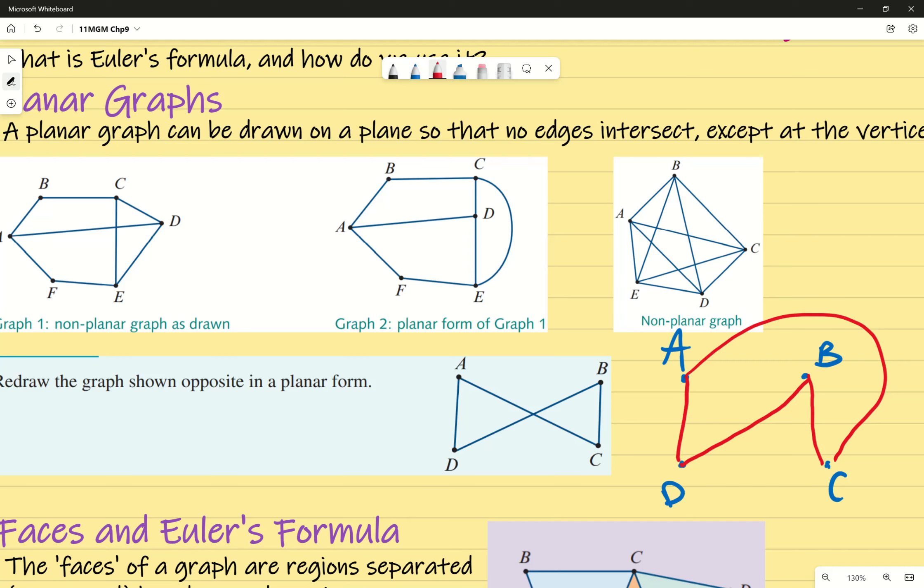You can just move edges around but it means the same thing. The actual length of the line you draw does not matter. Later on, we'll assign values to each edge, but for now, the length doesn't matter. Let's jump into Euler's formula.